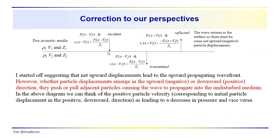Looking back at the diagram where we formulated the relationships between velocities, pressures, reflection coefficients, and transmission coefficients: if the particles on the surface start off at the leading edge of the wavefront by moving down — moving in the positive direction — that's going to produce a decrease in pressure. Conversely, if the particles are moving upward on the leading edge of the wavefront, that will produce an increase in pressure.